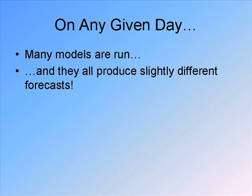On any given day, a large number of these computer programs called models are run. Some are run by government agencies like the National Weather Service — the NWS alone has several models to choose from. Some are run by individual forecasters, some by other countries that share their data with the United States. A large number of models are run on any given day, and each produces a slightly different forecast. This is why there is some uncertainty in the forecast — none of these forecasts are going to be exactly right everywhere.